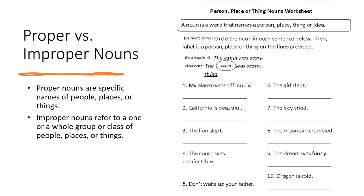Okay, so number one: 'My alarm went off loudly.' In that sentence, what would we say is the noun? That's right — alarm. Now, would it be a proper noun or an improper noun? An improper noun.